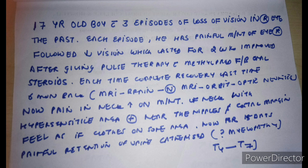If the patient has long segment myelitis — defined as involvement of three or more spinal segments — that indicates neuromyelitis optica. Other tests to send include anti-NMO (aquaporin-4) antibody and anti-MOG antibody.